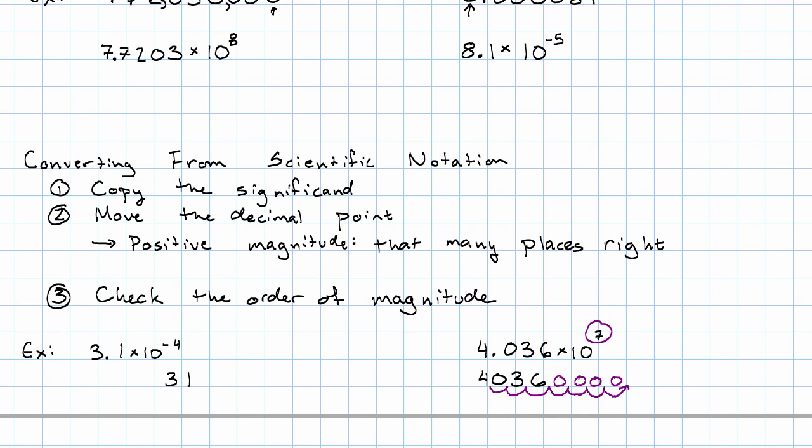For a negative magnitude, I'm going to ignore the sign and move that many places to the left. So again, I'm going to start from where my decimal point was originally, and I'm going to go 1, 2, 3, 4 places to the left. And again, I'm going to fill in zeros in my empty spaces. And then I'm going to check the order of magnitude again. 0, negative 1, negative 2, negative 3, negative 4. That checks out. You can see how you might make mistakes in counting out these spaces, so that step where you check the order of magnitude is actually very important.